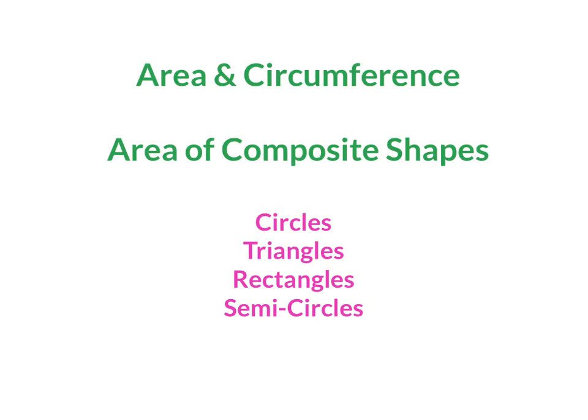This video is going to review how to find area and circumference of circles and then also find area of composite shapes. A composite shape is just a figure that's composed of more than one other simple basic shape, so we're going to do semicircles, rectangles, triangles, and circles.